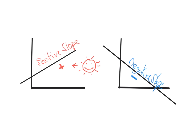If the line, on the other hand, is going downhill from left to right, it has a negative slope.